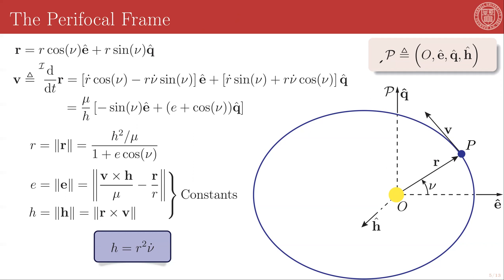The parafocal frame directions are inertially fixed. e is a constant of integration, h is conserved by the physics of the problem, which means that q is also inertially non-accelerating with respect to any inertial frame that is itself not rotating or accelerating with respect to these two bodies.